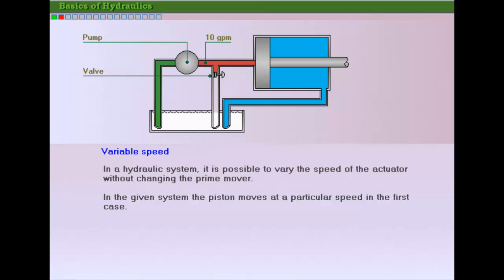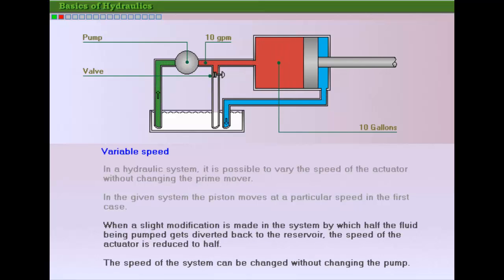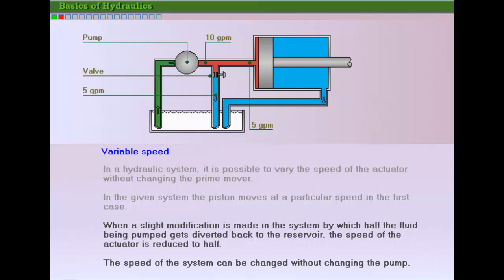In the given example, the piston moves at a certain speed when the output of the pump is going directly to the cylinder. The speed is reduced to half when half the pump's output is diverted to the reservoir. Thus, the speed of the system can be changed without changing the pump or the pump speed.